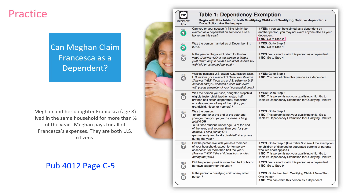We move on to step two: was the person married as of December 31st of the tax year? Francesca is not married — she's eight years old — so we move on to step four: was the person a U.S. citizen? Yes, so we move to step five: was the person your son, daughter, or one of those other relationships listed? This is the relationship test. Francesca is Megan's daughter, so yes — step six: was the person under age 19 at the end of the year and younger than you, or a full-time student under age 24? Francesca is eight years old, so yes. Step seven: did the person live with you as a member of your household, except for temporary absences, for more than half the year? Francesca did live with Megan for the entire year, so yes. Step eight: did the person provide more than half of his or her own support for the year? Megan paid all the expenses, so no. Step nine: is the person a qualifying child of any other person? That's not going to be the case here. So Megan is going to be able to claim Francesca as her dependent.